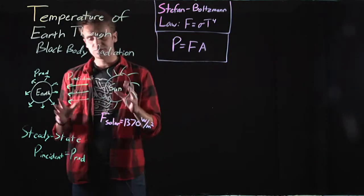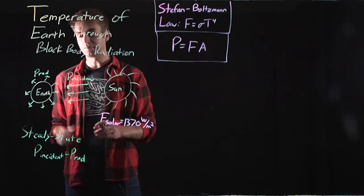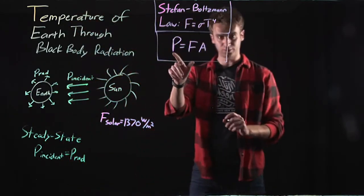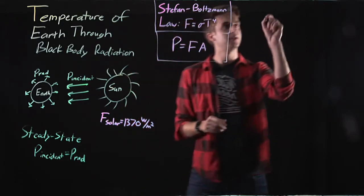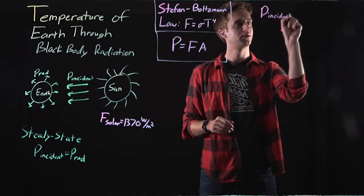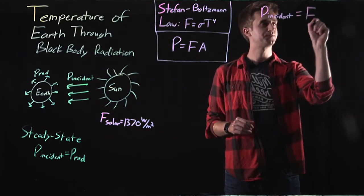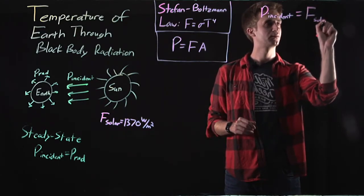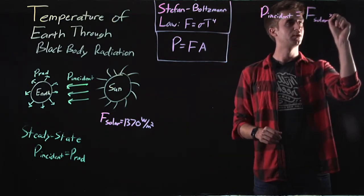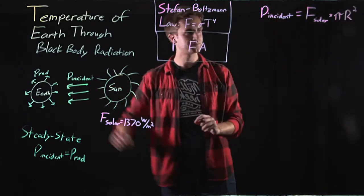And we can make a simplifying assumption that the Earth receives all of its power proportionally to its cross-sectional area. So we can say that because power equals flux times area, that P incident, the radiation that the Earth receives, equals the solar flux times the cross-sectional area of the Earth, which is pi r squared, where r is the radius of the Earth.